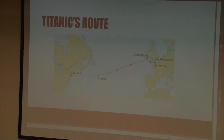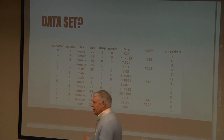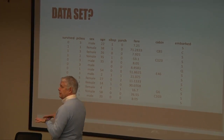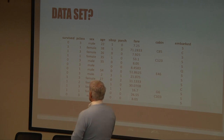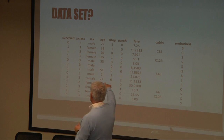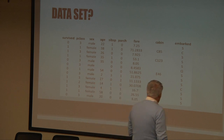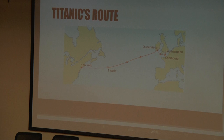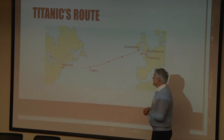Let me go through what some of the fields are. 'Survived' is whether they survived or not — zero means they didn't make it, one means they did. 'P-class' refers to the class they were traveling, and I think there were three levels. Then sex, age, SIBSP which means siblings — how many siblings or parents they were traveling with as a family. Then parents and children, the fare, the cabin, and where they embarked — Southampton or wherever.